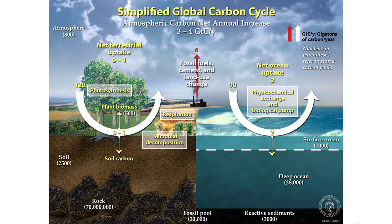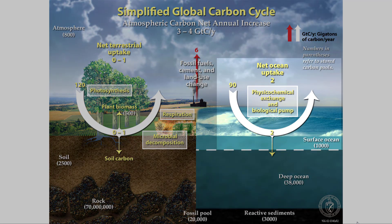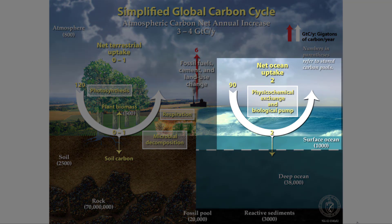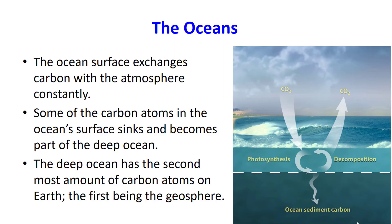The ocean will take in carbon dioxide from the atmosphere, and it will release it back to the atmosphere also — that's a constant going back and forth. Some photosynthesis will happen, taking in carbon dioxide.